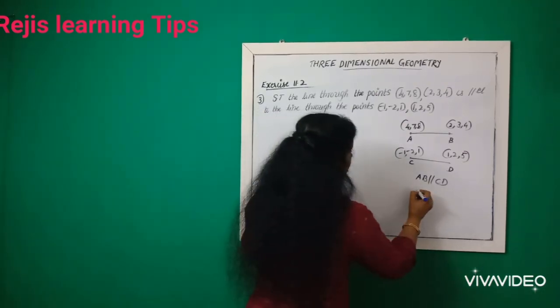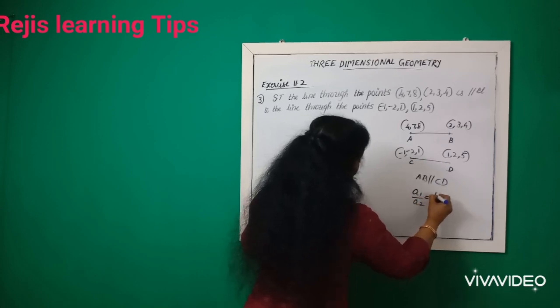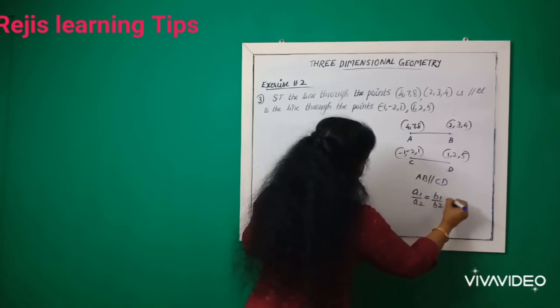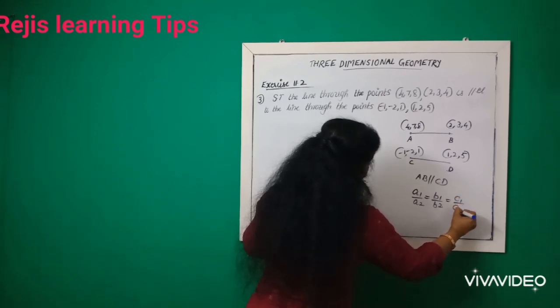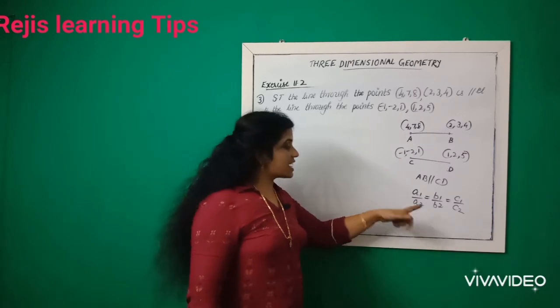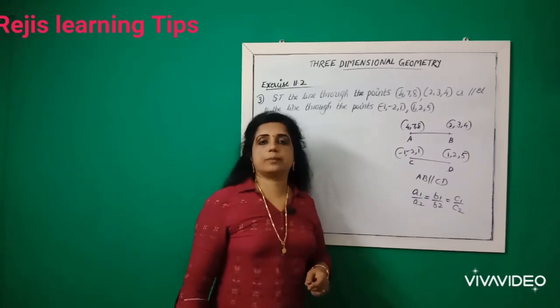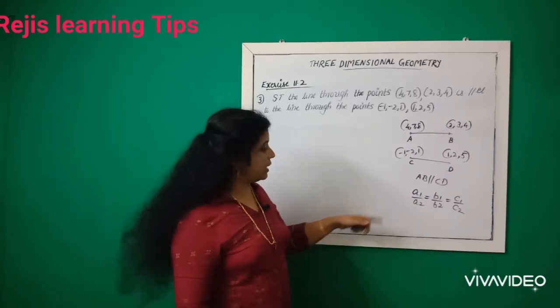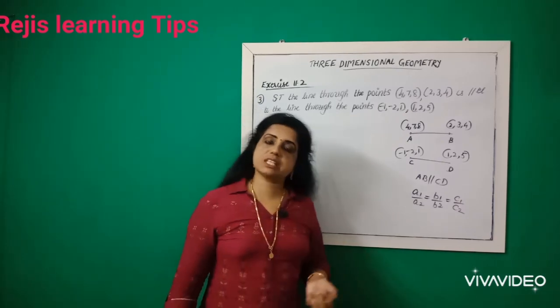For AB and CD to be parallel, we need a1/a2 = b1/b2 = c1/c2.